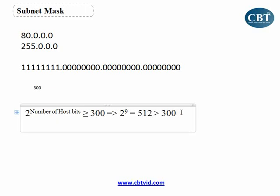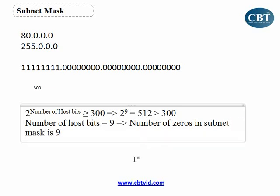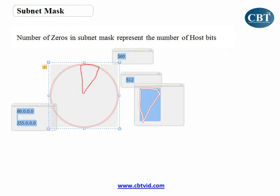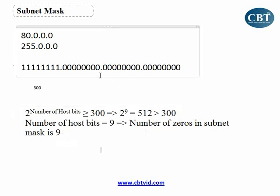So the number of host bits is 9. This means the number of zeros in the subnet mask is 9, because the zeros in a subnet mask represent the host bits. So I need exactly 9 zeros in my subnet mask.